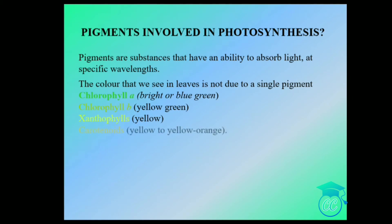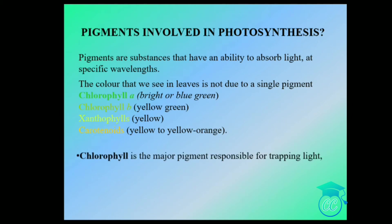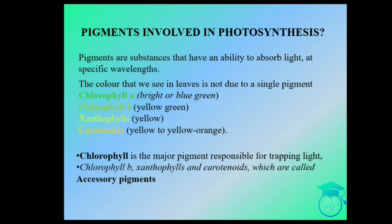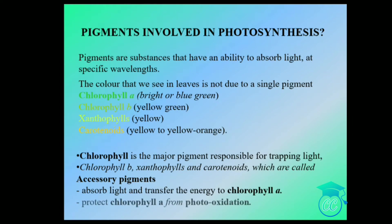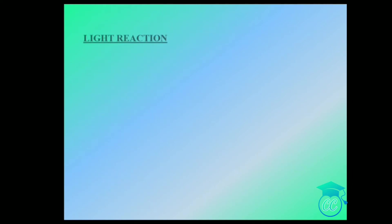Chlorophyll a is the major pigment responsible for trapping light. Chlorophyll b, xanthophylls, and carotenoids are called accessory pigments. The role of accessory pigments is to absorb light and transfer the energy to chlorophyll a, and also to protect chlorophyll a from photo-oxidation.